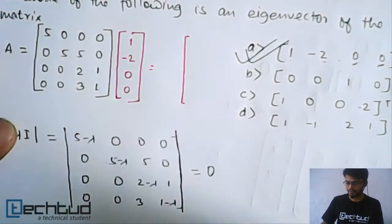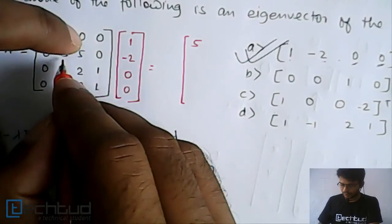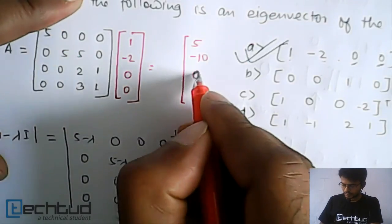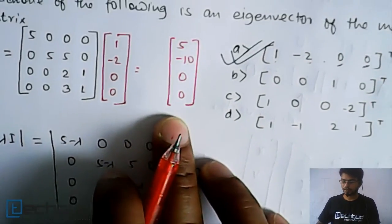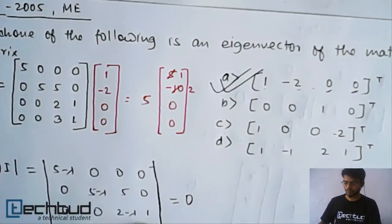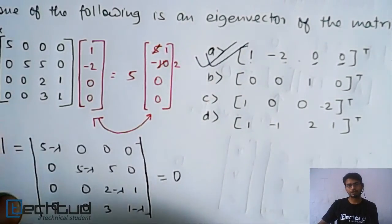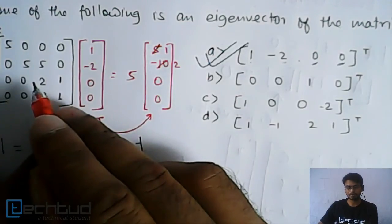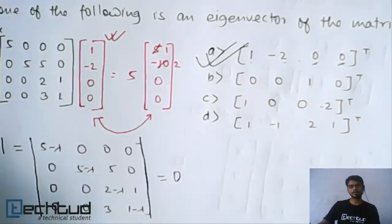If you multiply this vector with the matrix, you will get: first element 5, second element minus 10, then 0 and 0. From this result, you can take 5 common, giving 1, minus 2, 0, 0 — which is the original vector. Once you take something common and the resulting vector equals the original vector you multiplied, then this is a correct eigenvector of this matrix.